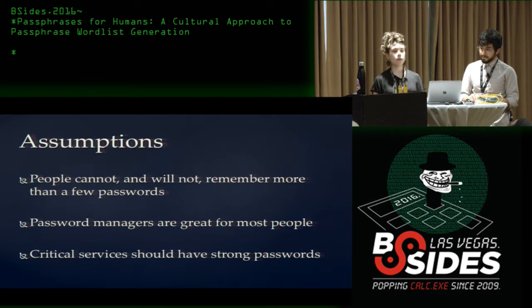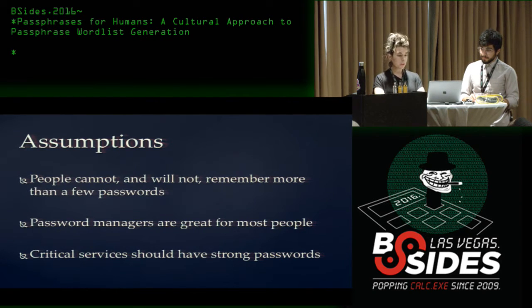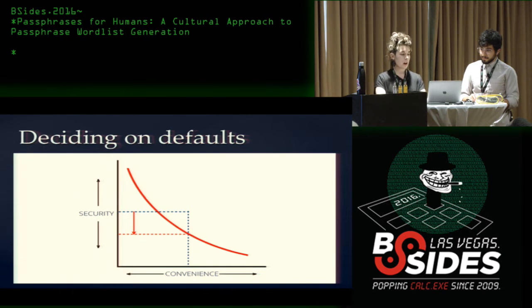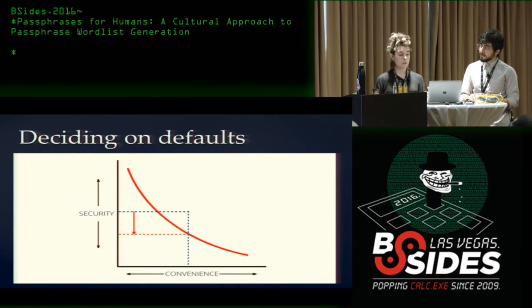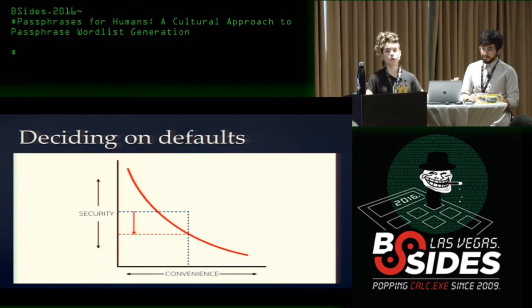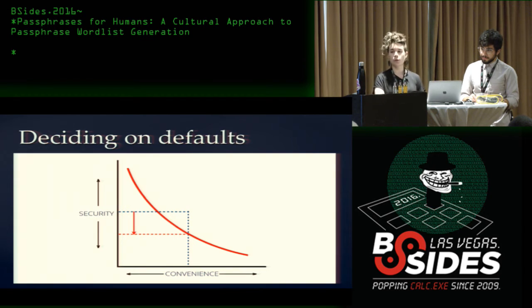We also think password managers are great for most people in most use cases, precisely because you have a million services and you need to have good passwords for them. We also think that critical services should have strong passwords — for example, maybe you have a passphrase for your password manager like 1Password, and another passphrase memorized for Gmail or Facebook, which you might need to access from someone else's computer if your phone is dead. Based on these assumptions, when deciding on defaults, we have a trade-off: more secure things are often less convenient, and we're constantly straddling that line.